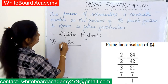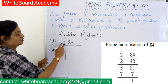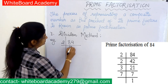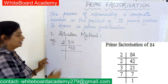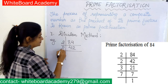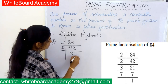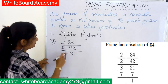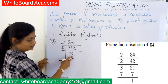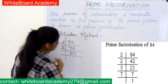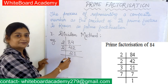The smallest prime factor for 84 is 2. So let's divide 84 by 2 — we get 42. Again for 42, the smallest prime factor is 2, so we divide 42 by 2 and get 21. Now the smallest prime factor for 21 is 3.